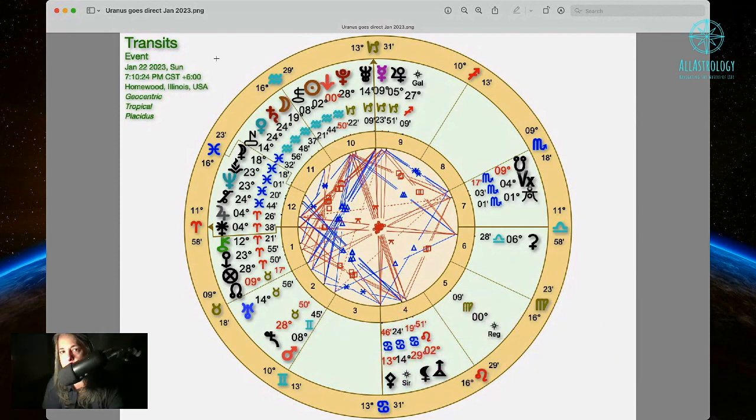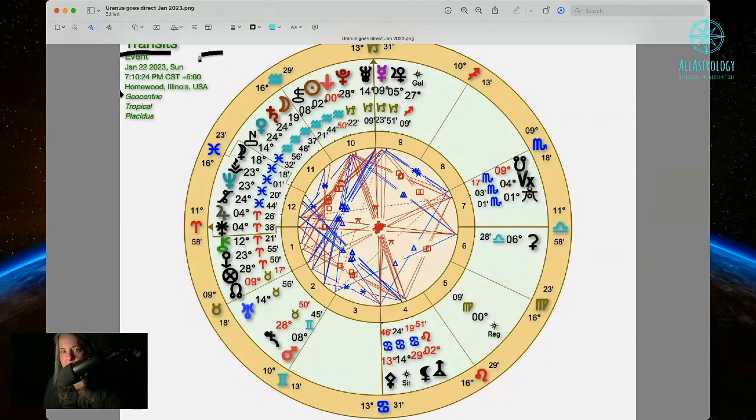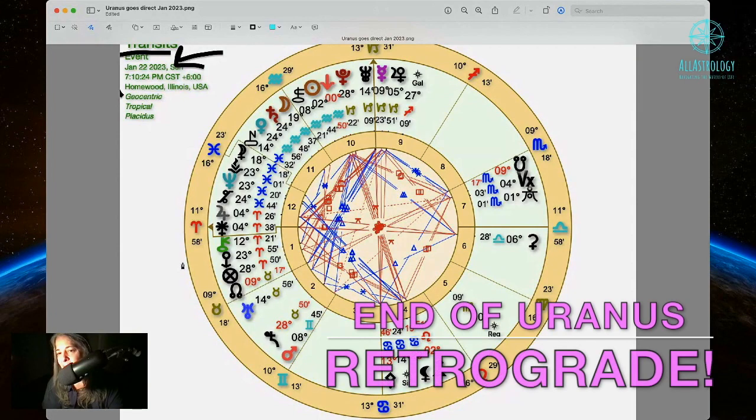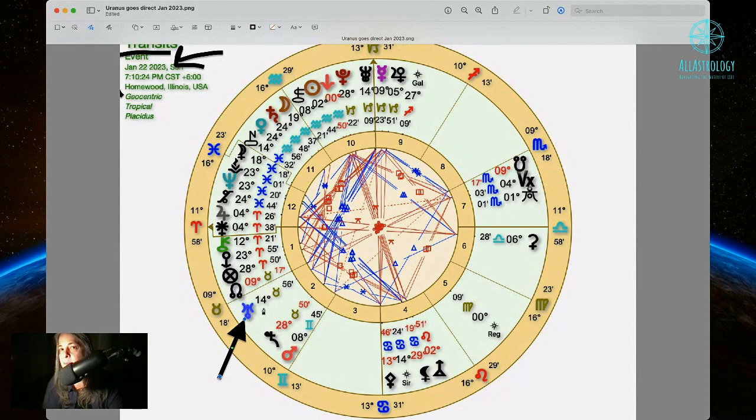Top left-hand corner, look at that: January 22nd, 2023. So where's Uranus now? We've got to look for Taurus energy. There it is. You see the Uranus? Did you find the Taurus energy? There's Uranus, right there at 14°56'.